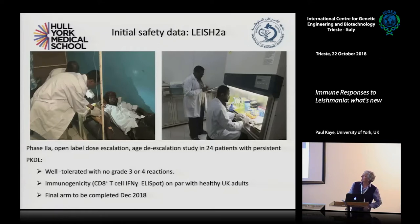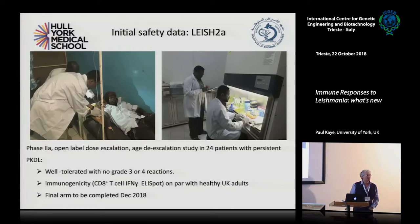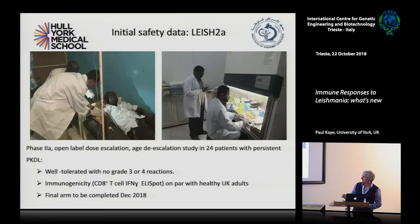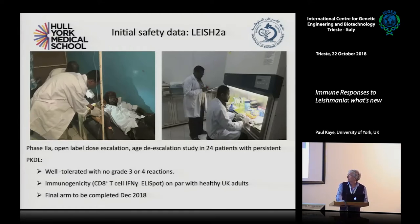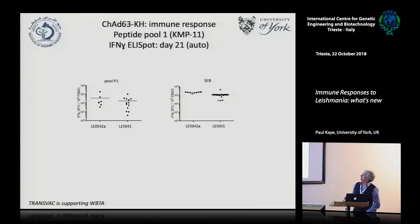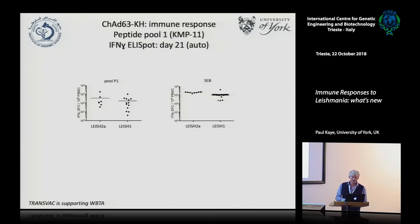We are now almost finished the Phase 2A safety study — it's been well tolerated with no Grade 3 or 4 events. Preliminary data shows good immunogenicity in patients. We should finish the last cohort in about two weeks and then move into the randomized controlled trial. The CD8 T cell response to vaccination in patients is on par with our healthy UK volunteers, and their mitogen response is on par if not slightly better.